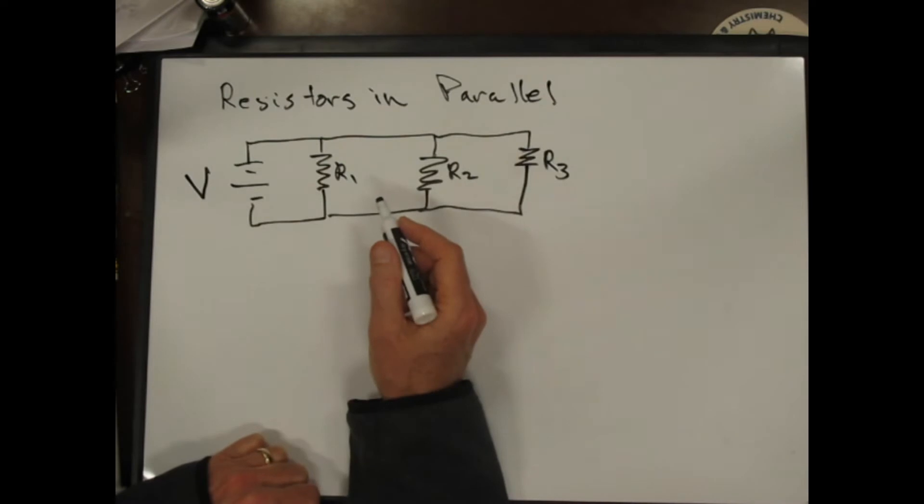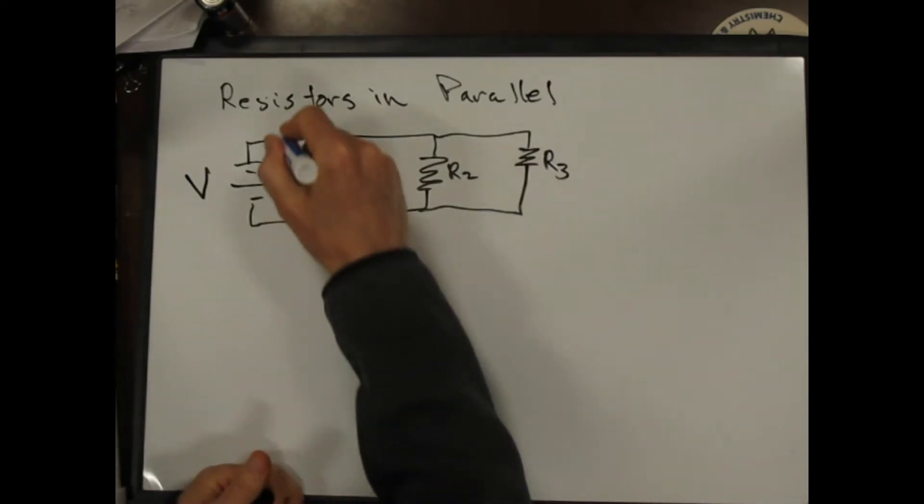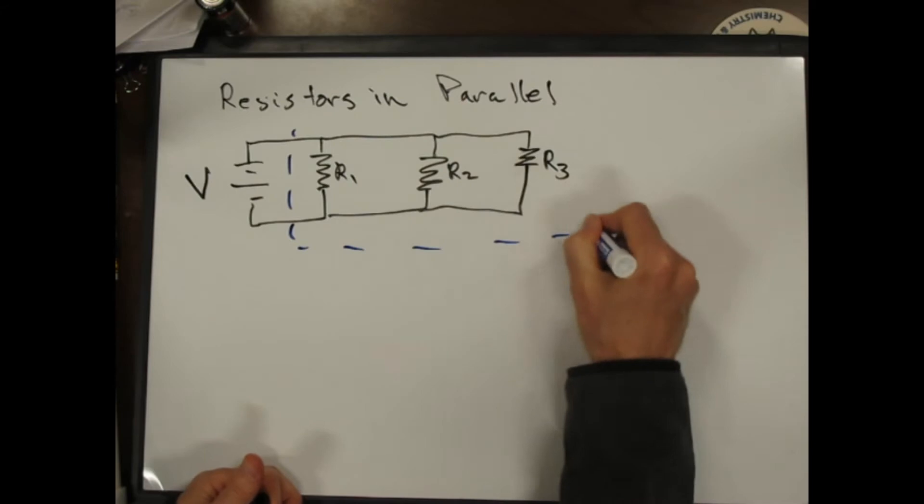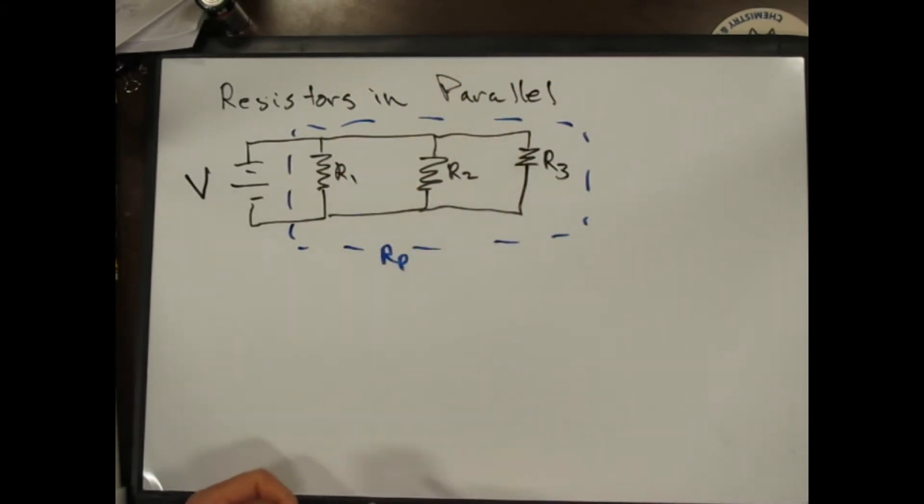So we want to know, just like we did with resistors in series, what is the total resistance of this circuit? That's the first question we ask. So we want to treat this, maybe imagine that this is just one giant resistor and we'll call it R parallel.